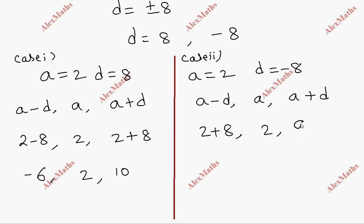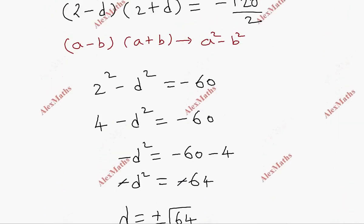For case 2, it's 2 minus (-8), 2, and 2 plus (-8). That gives us 10, 2, and -6.